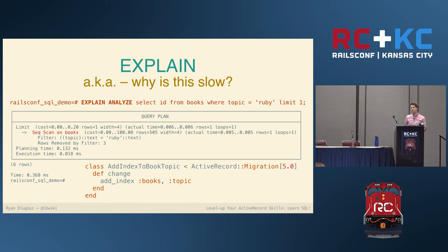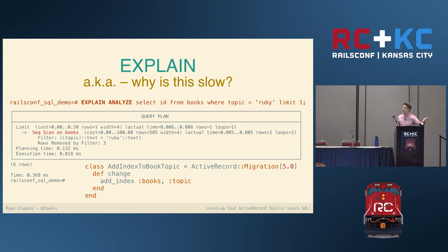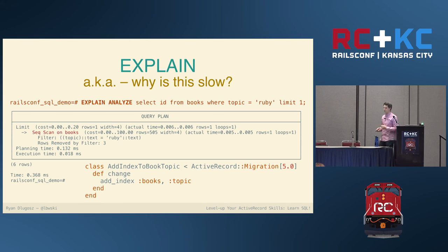Rails dumps the actual SQL being run into the development logs when you're running in development mode. Go into your log file, and any time you see the word SELECT, copy that query, stick it into your database console, tack the word EXPLAIN onto the front, and check the output. It's a great way to learn more about how the database works. In short, run EXPLAIN on everything.